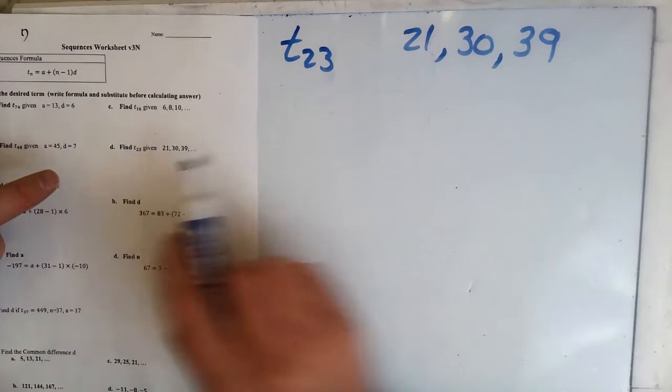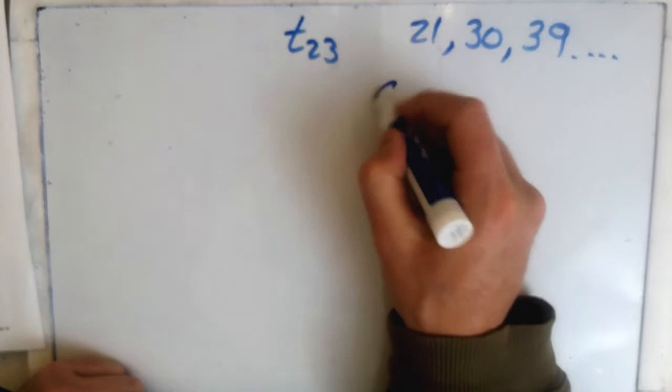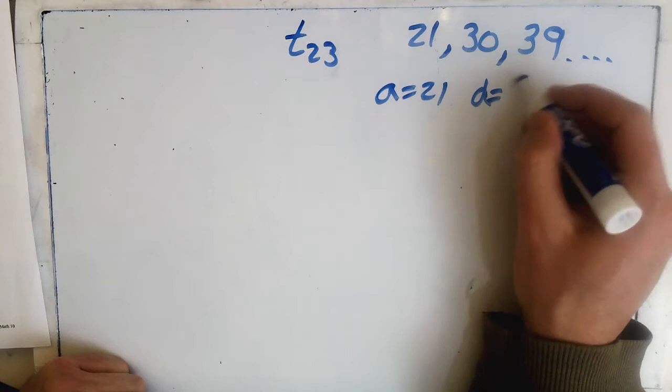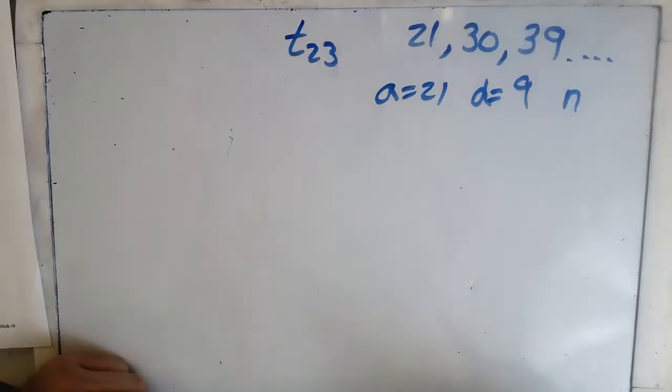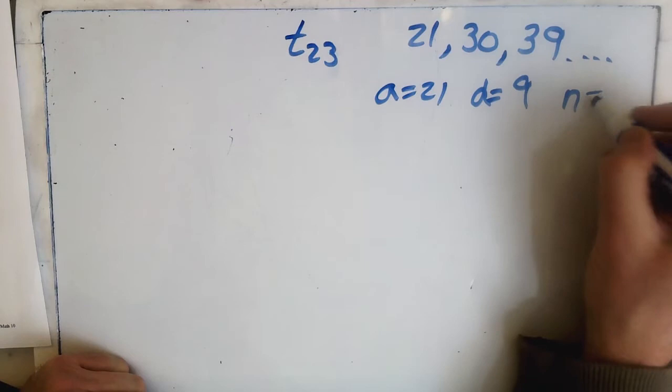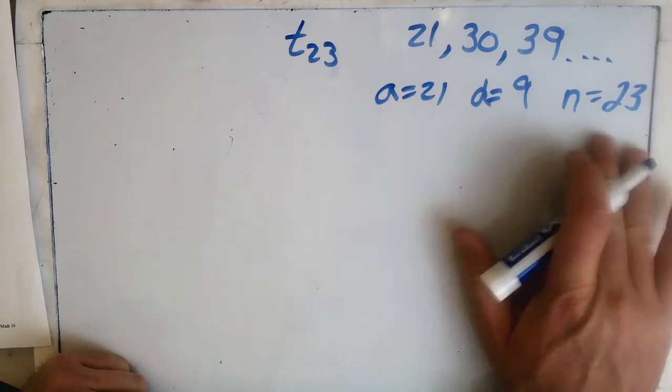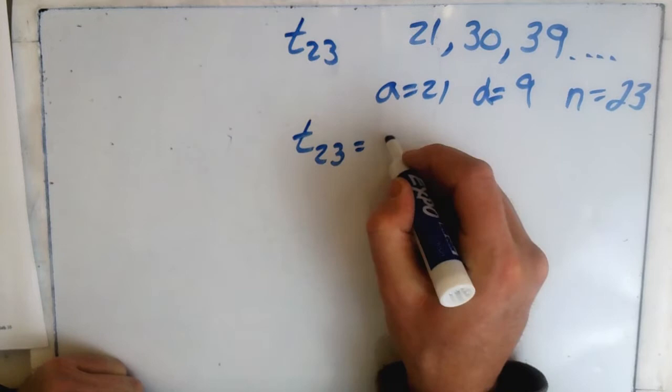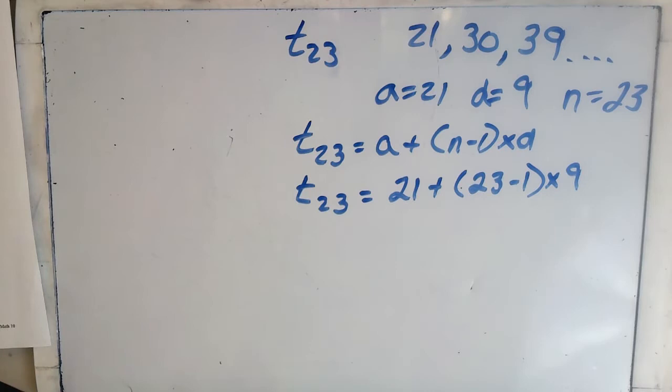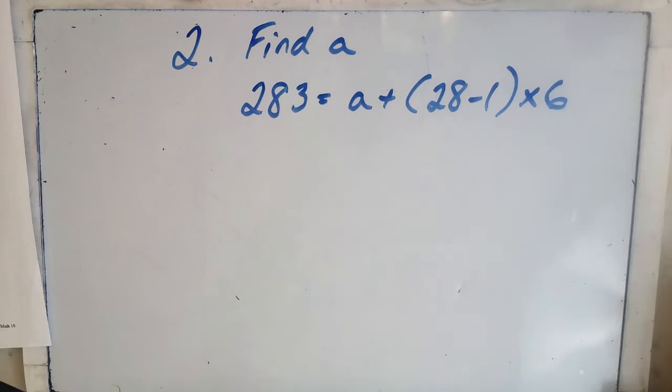The next one: we're trying to find T23, the 23rd term. We have the first three terms, so we have to find A and D. A is 21, the first term. For D, we just subtract: 30 minus 21. N is the hardest, but it's the small number with the T, which is 23. We plug everything into the formula — it's just BEDMAS — so plug it into the calculator to get T23 equals 219.